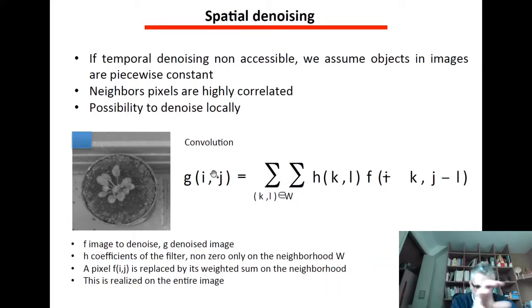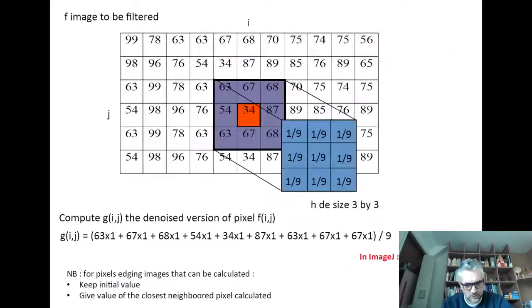So you will sweep this local weighted sum through all the image and this is called convolution. So equivalent to a local mean in the image.